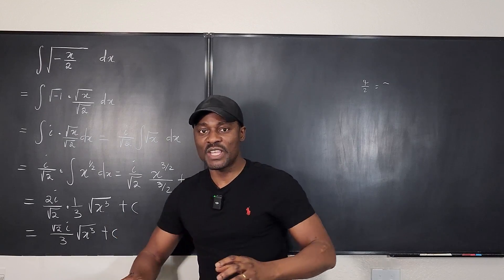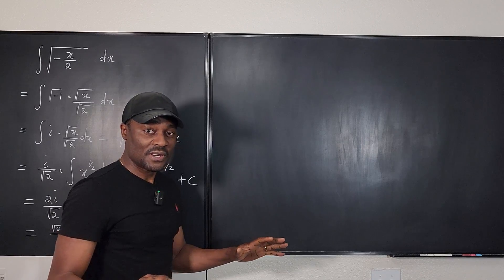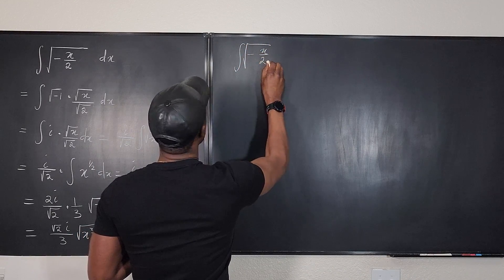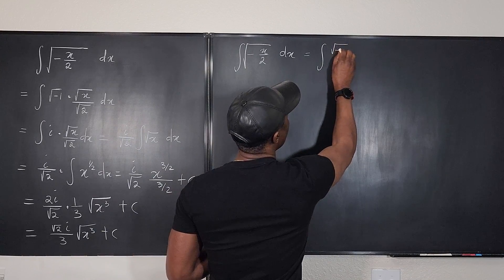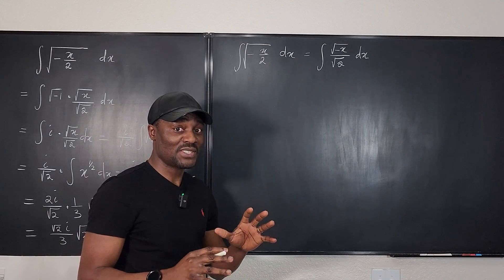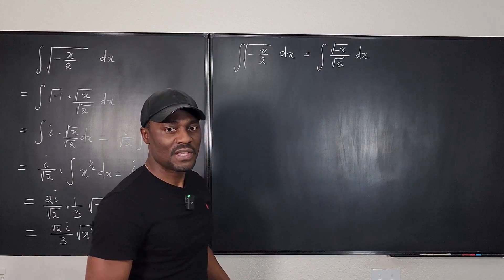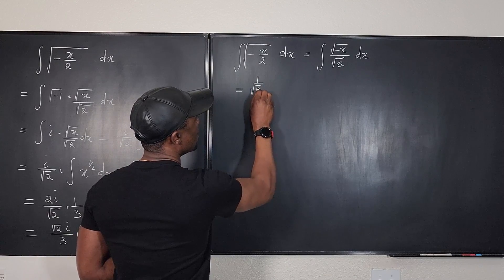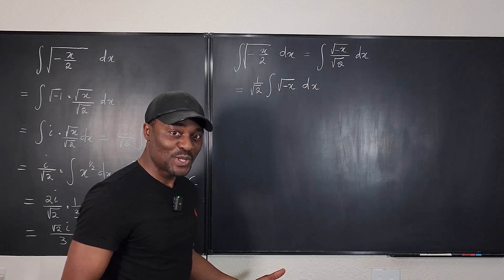What if you don't want to deal with imaginary numbers and want to take everything as real? Let me show you an alternative way of solving this. We write the integral of the square root of negative x over the square root of two dx. I did not pull out the square root of negative one because I don't want to create i — I just want to deal with it as if everything is real. I can pull out the square root of two, giving one over the square root of two times the integral of the square root of negative x dx. Then let's do u-substitution.